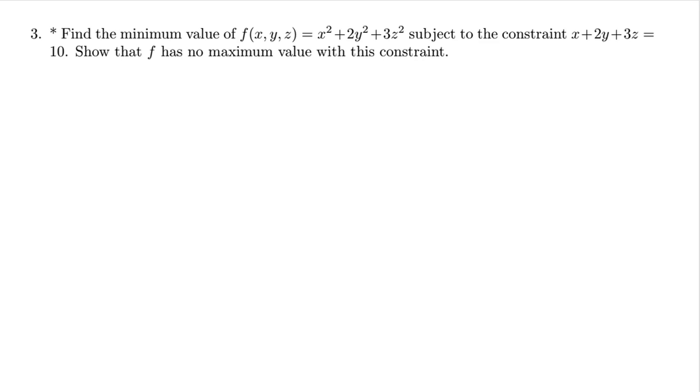Our job is to find the minimum value of this function subject to the constraint. Classical Lagrange multiplier method problem. There's something at the end there that says we need to show that the function has no maximum value with this constraint.